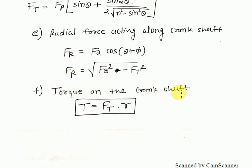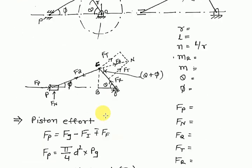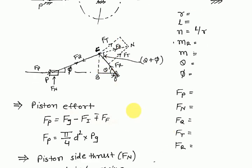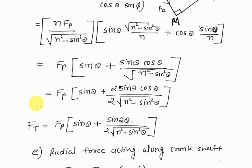The last quantity is torque on the crankshaft. Torque T = force × distance. The tangential force ft acts perpendicular to the crank of radius r. Therefore, torque T = ft × r. This completes all the force analysis covered in this lecture.